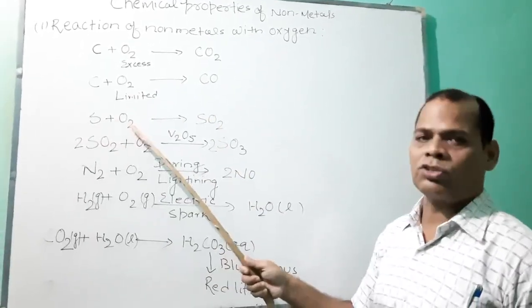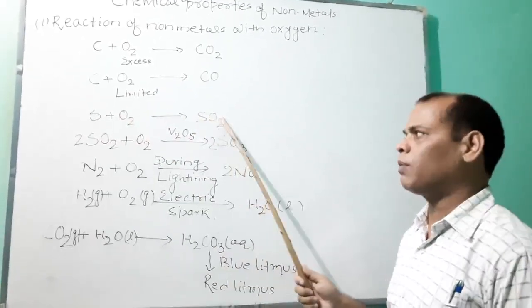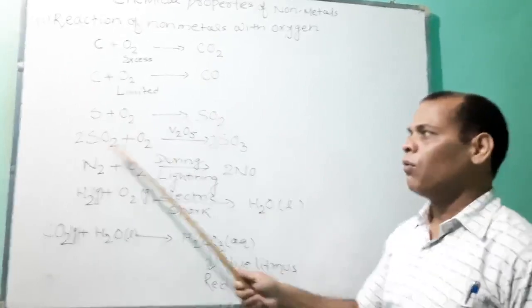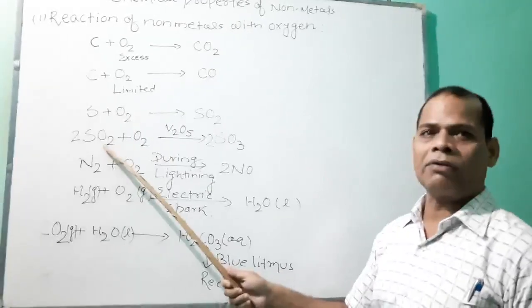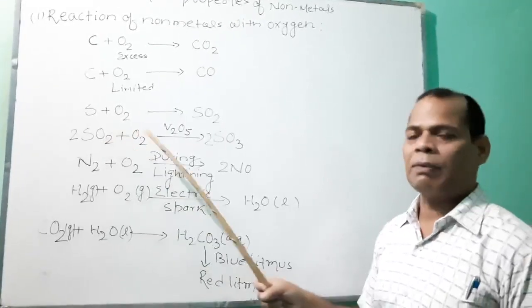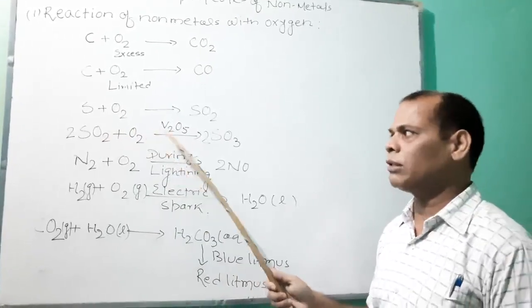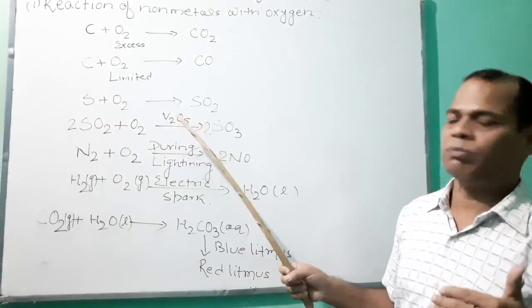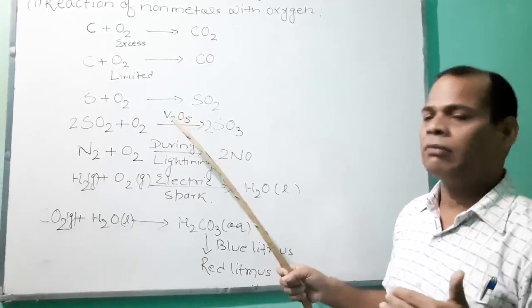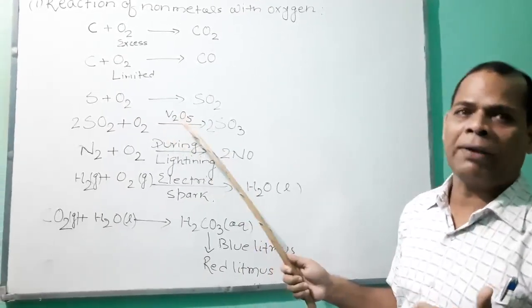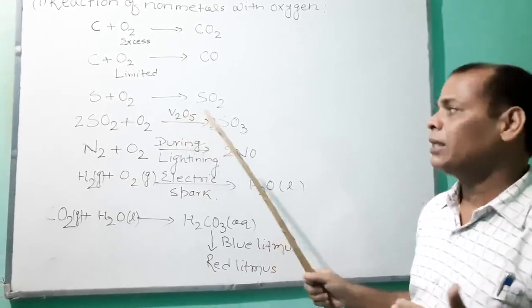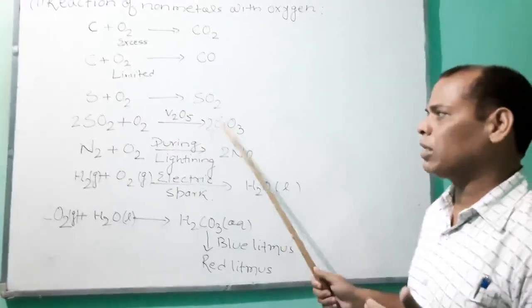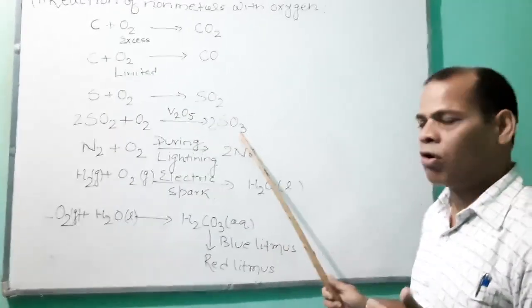Sulfur reacts with oxygen to form sulfur dioxide. When sulfur dioxide is passed through oxygen in the presence of catalyst V₂O₅ — vanadium pentoxide — it forms sulfur trioxide.